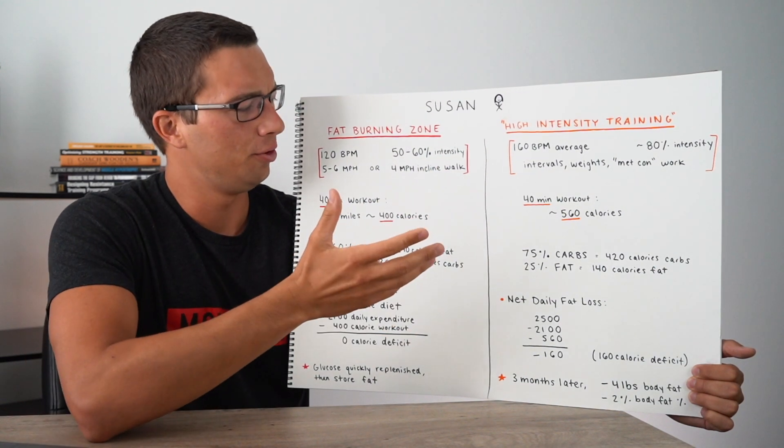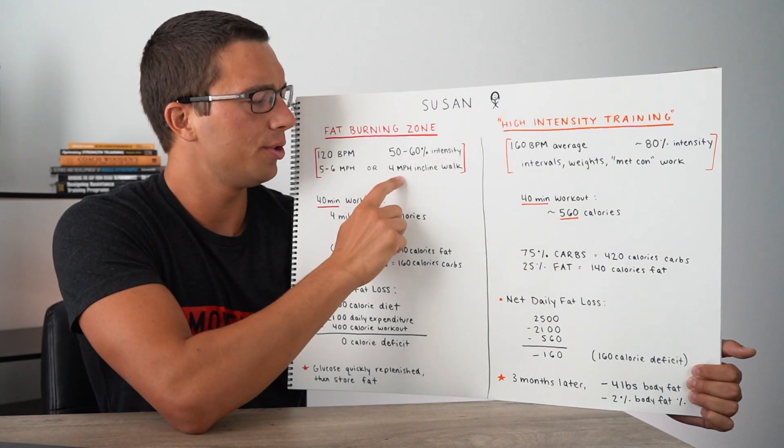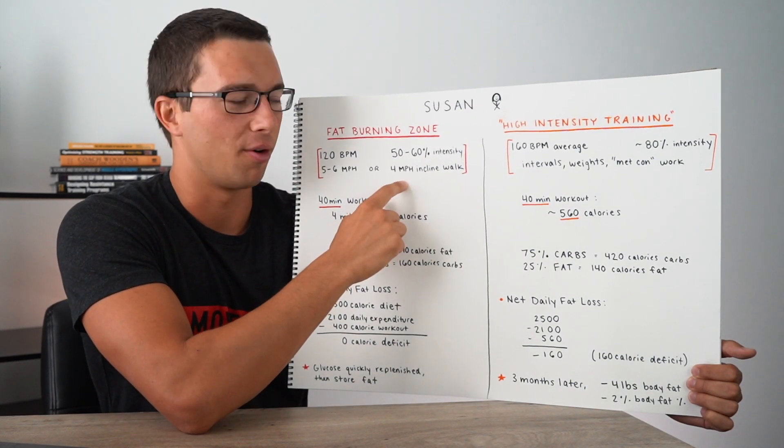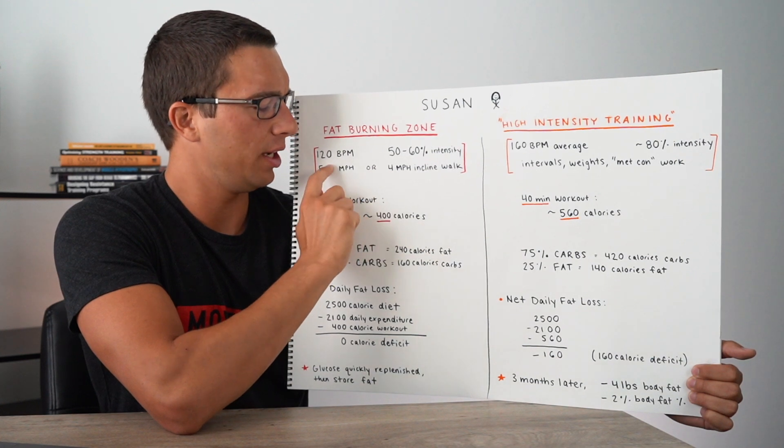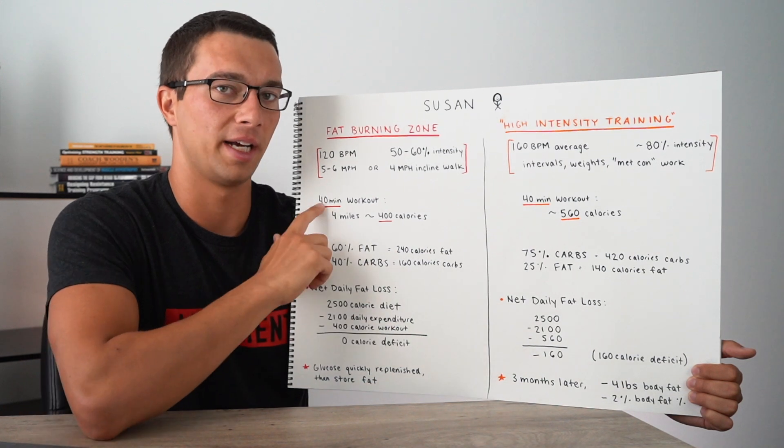So for Susan, who's maybe 30 years old, she might be around five to six miles per hour on the treadmill or doing an incline walk at maybe four miles per hour. And this would get her to a heart rate of around 120, maybe 130. And let's just say she's there for a 40 minute workout.